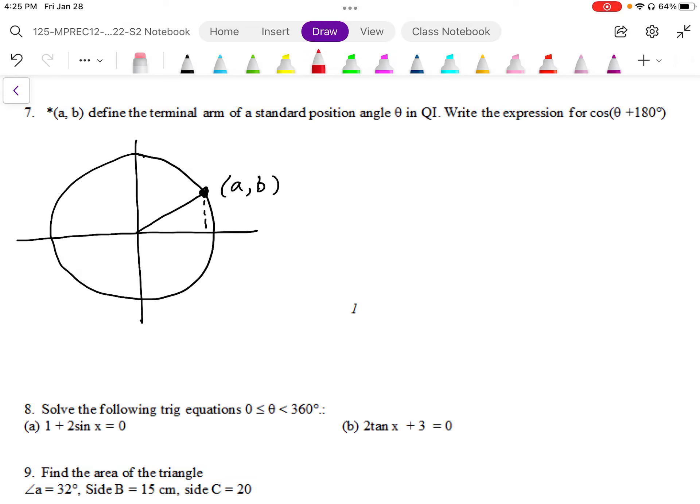So we have AB defines the terminal arm of the angle theta in quadrant one. So here's my angle theta. I've drawn it randomly in quadrant one. Make sure you don't draw it at 45 degrees because that implies symmetry, which may or may not exist.